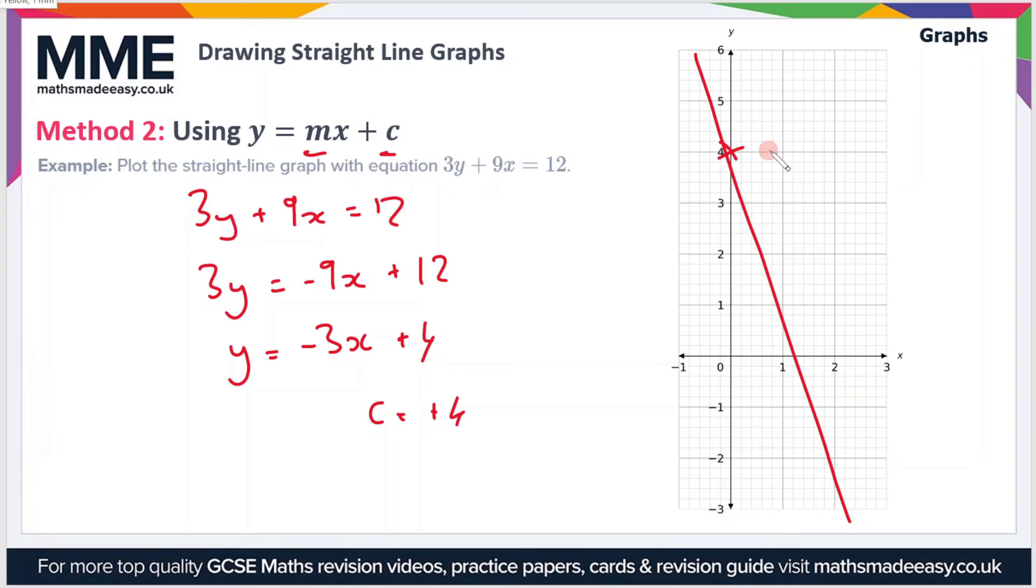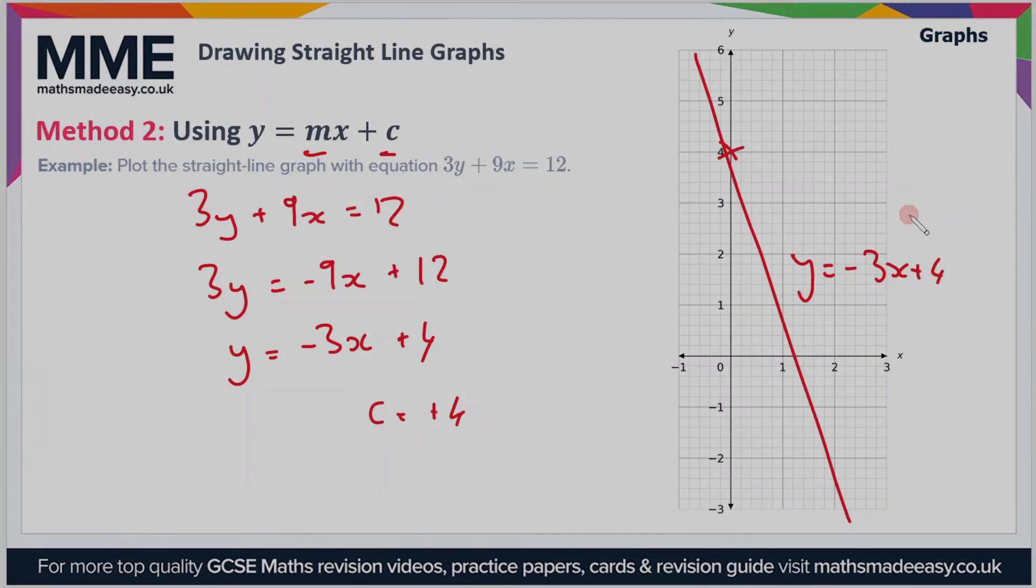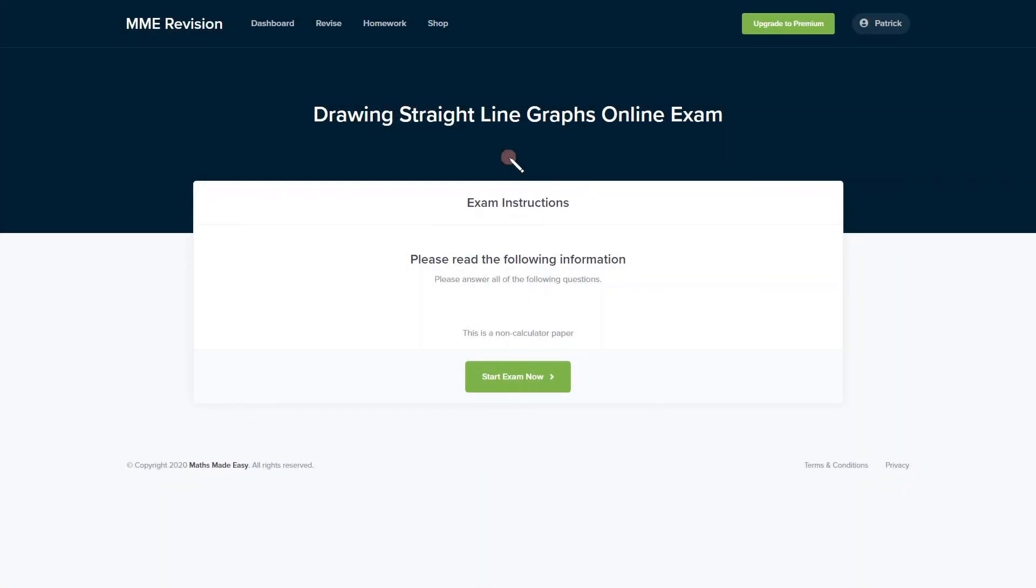Therefore we have a graph of y equals minus 3x plus 4.